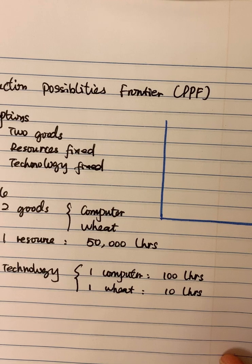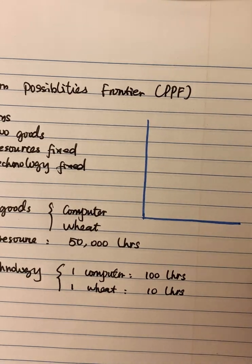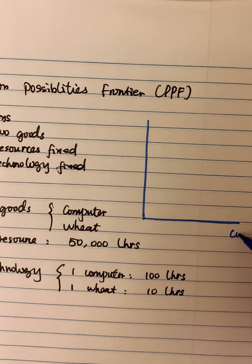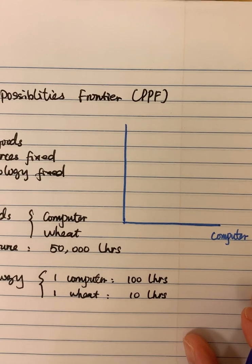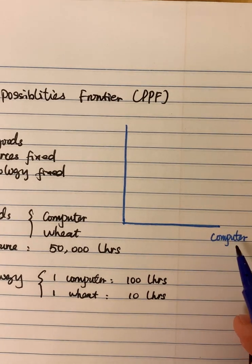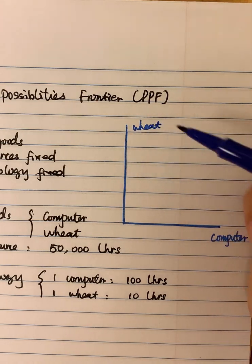So here you can notice I have a graph. I can put the computer here. You can also put wheat here - it doesn't matter what type of goods you would like to put on the horizontal axis. So I can put computer here and I can put wheat on the vertical axis.